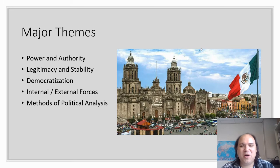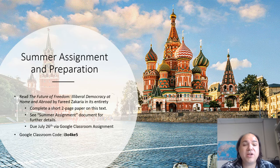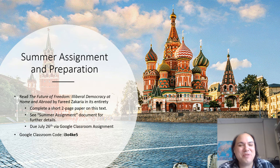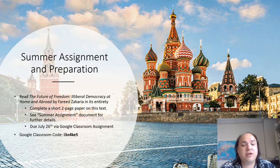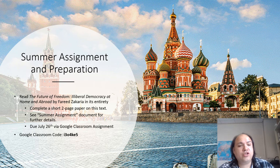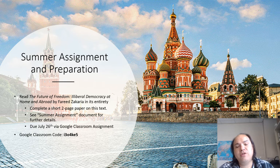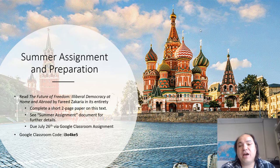Those are my people — I'm going to have to go to Mexico and visit and start eating again. Summer assignment and preparation: that book I talked about, The Future of Freedom, you've got to read it in its entirety. It's about 400 pages — read it. It's a fast read, it's fun, it's engaging, it's topical. You're going to love it. Write a short two-page paper on the text. Please see the summer assignment document for details. That's due on July 26th. We've got the Google Classroom code — please be ready, be prepared, and reach out if you need anything. I look forward to seeing you, and we're going to have a wonderful year. Thank you guys so much.